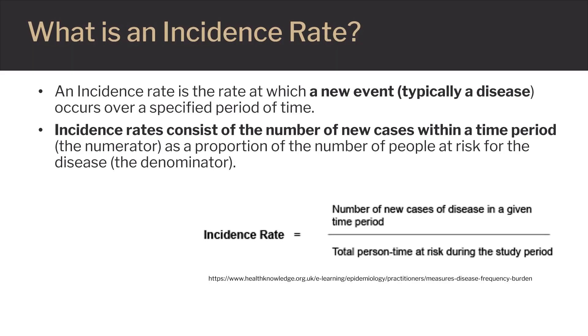Incidence rates are important clinical and epidemiologic surveillance calculations, which quantify the rate at which a new morbidity or disease occurs across a susceptible population within a given period of time. In general, rate calculations are set up by expressing the number of new cases of a specific disease in the numerator, and then dividing that by the total number of susceptible persons in a population across a given period of time in the denominator.